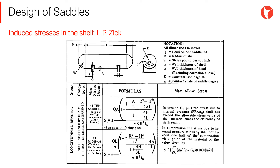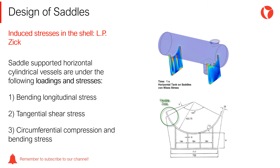One of the most important aspects of the design of saddles for horizontal vessels is the forces induced in the shell. To check the stress state of the shell, normally the Zick method is followed. The Zick work to determine stresses in the shell of pressure vessels gained such relevance that it was adopted and published by the ASME Code for Pressure Vessels. A methodology for the determination of stresses in the shell and heads of a horizontal pressure vessel supported on saddles was first published in 1951 by L.P. Zick.